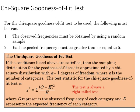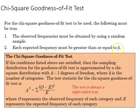If we're going to do the chi-square goodness of fit test, we need to meet a couple of criteria. First, the observed frequencies must be obtained using a random sample, and we also need a minimum of five cases in each frequency class. If we don't meet those, then it's not an appropriate test.